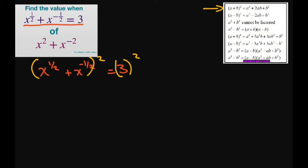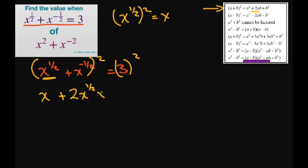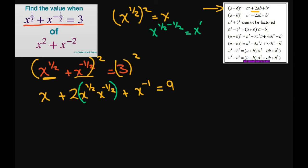I'm looking at this formula here. When you square this, you're just going to get x, because x to the power of 1 half squared just equals x. And then we get plus 2ab — that's going to be 2 times x to the power of 1 half times x to the power of negative 1 half. Then plus, when you square this, you're going to get x to the power of negative 1 equals 9. Now this part right here equals 1, because x to the power of 1 half minus 1 half equals x to the power of 0 equals 1.